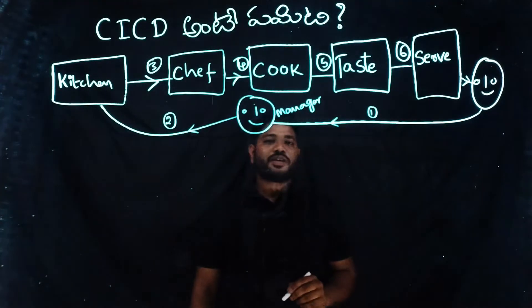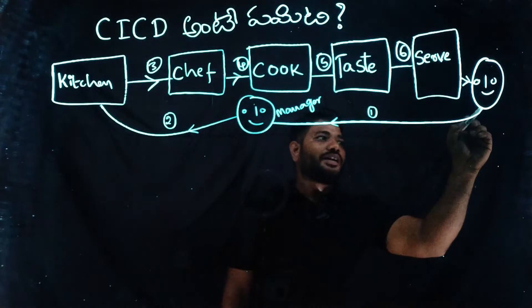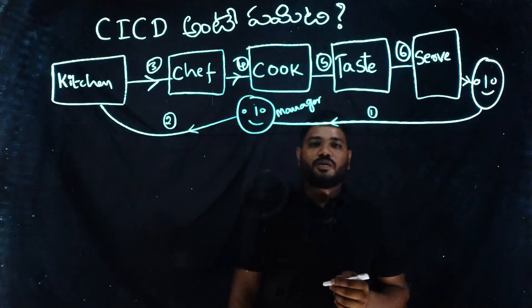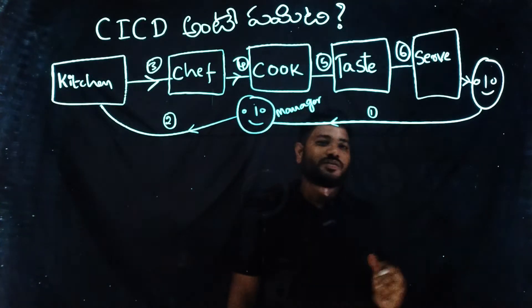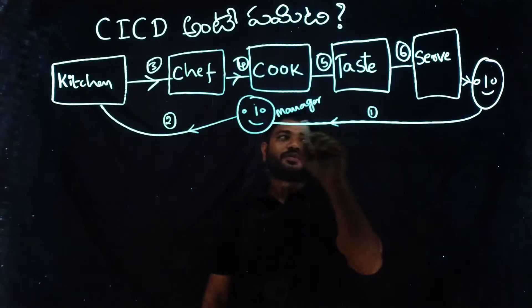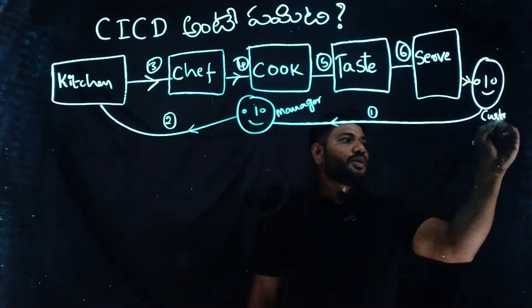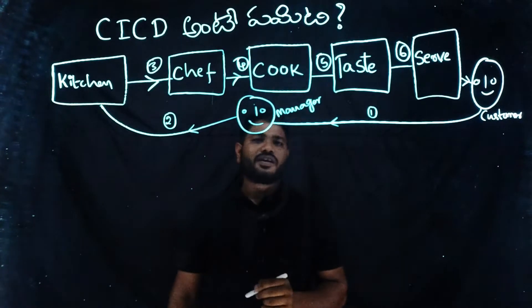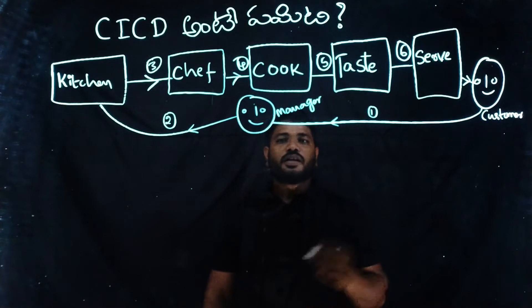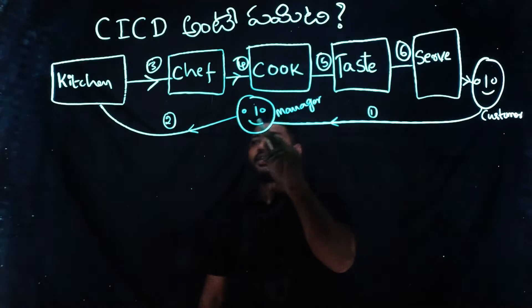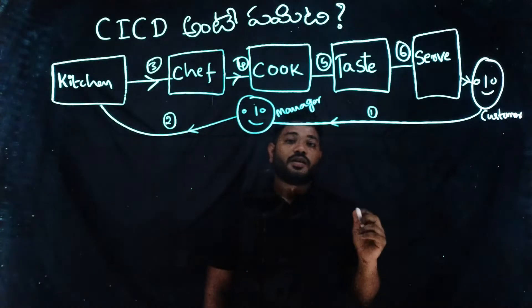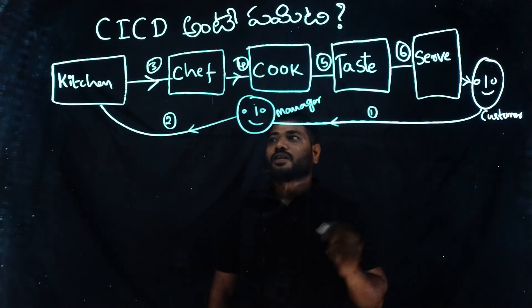In this case, the customer is receiving the order. If you want to receive the order but the customer is not satisfied, the manager will give feedback. The manager is saying, hey Chef, the customer doesn't like it, so you need to redo it.